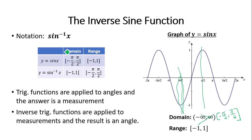As a result, the inverse sine function — sine inverse of x — has its domain and range switched from the original. The sine function, when restricted to the domain negative pi over 2 to pi over 2 with range negative 1 to 1, becomes the inverse sine function with domain negative 1 to 1 and range negative pi over 2 to pi over 2. The roles of the domain and range switch places.